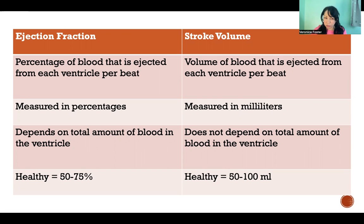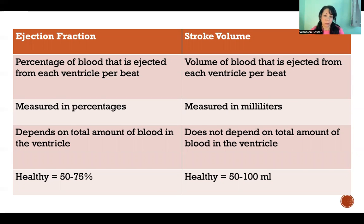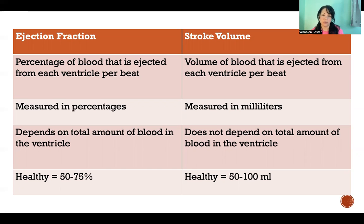They're very closely related, and students often get these two concepts confused. They're both referring to the amount of blood that's ejected per beat, but the ejection fraction is the percentage of the blood in the ventricle that's ejected, and the stroke volume is the actual volume — the actual measurement of the amount of blood that was ejected per beat.